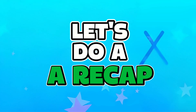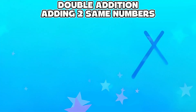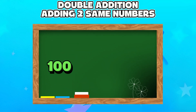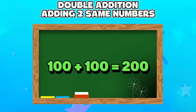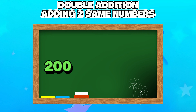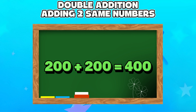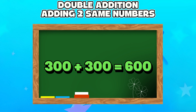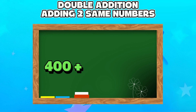Let's do a recap. Let's go — double addition, adding the same numbers. 100 plus 100 is equals to 200. 200 plus 200 is equals to 400. 300 plus 300 is equals to 600. 400 plus 400 is equals to 800.